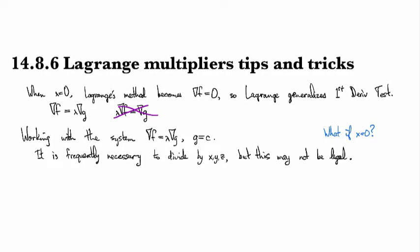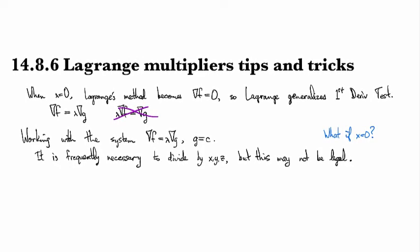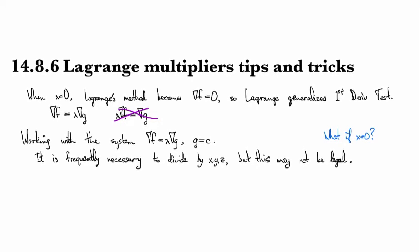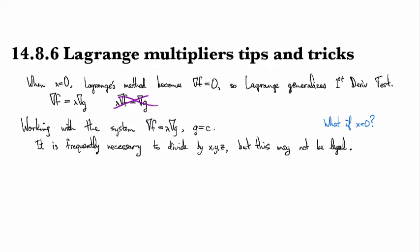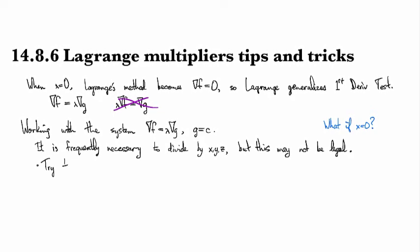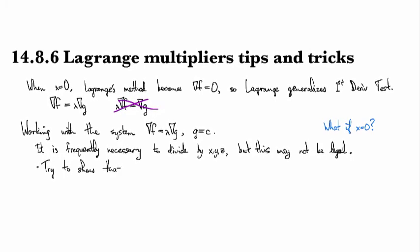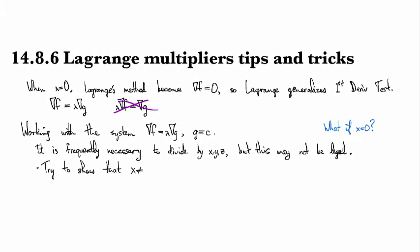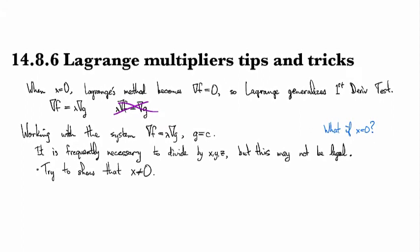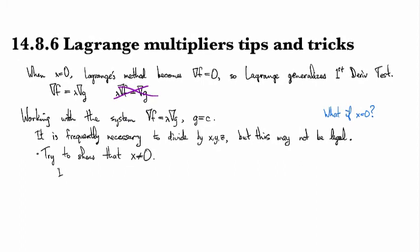And I just gave an example of that in the previous clip there, 14.8.5. Okay, so what do you do instead? Well, one thing that you can do is you can often check that that variable is not equal to zero. And I'm calling it x here for simplicity, but of course, it could be y, it could be z. So there's different ways to do this.